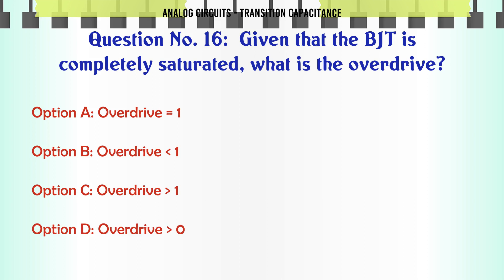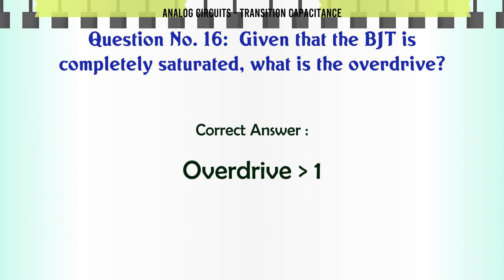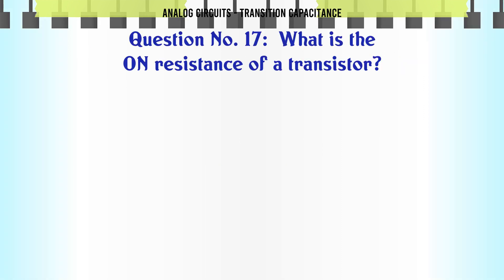Given that the BJT is completely saturated, what is the overdrive? A: Overdrive < 1, B: Overdrive = 1, C: Overdrive > 1, D: Overdrive = 0. The correct answer is Overdrive > 1.